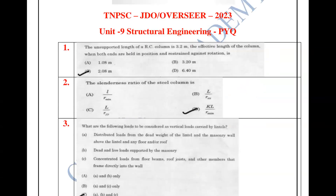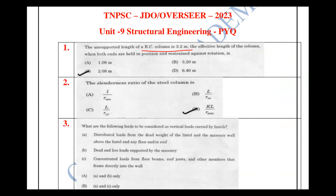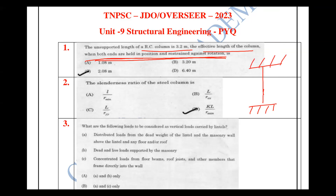The span length of the RCC slab is 3.2 meters. The effective length of the column when both ends are held in position and restrained against rotation — both ends are fixed. If both ends are fixed, the effective length is 0.65L.